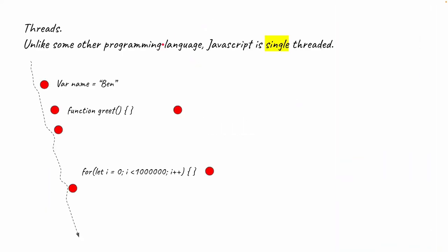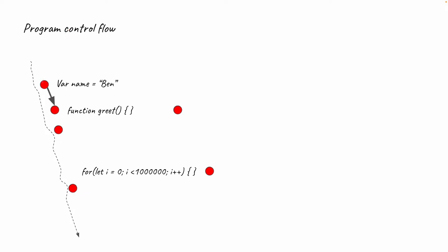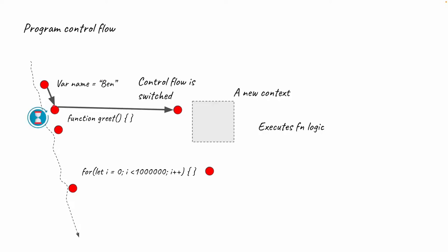Talking about threads — in JavaScript, unlike other programming languages, JavaScript is a single-threaded language. Assume this is our application with variables and functions sprinkled throughout. The control flow starts, evaluates variables, and when a function is invoked, the control flow is switched and a new context is created.